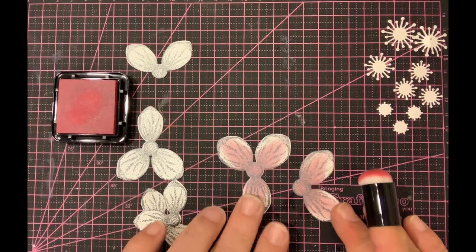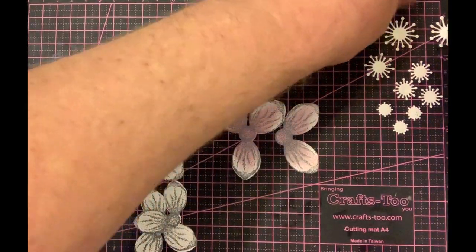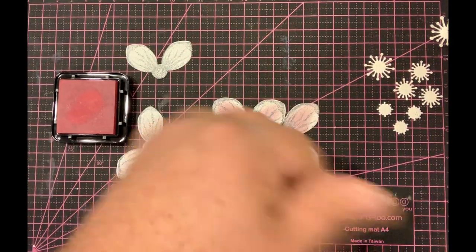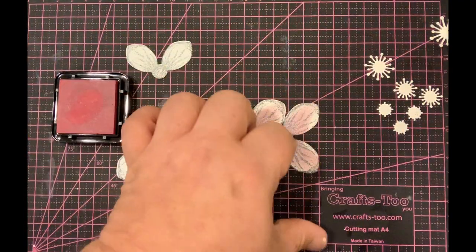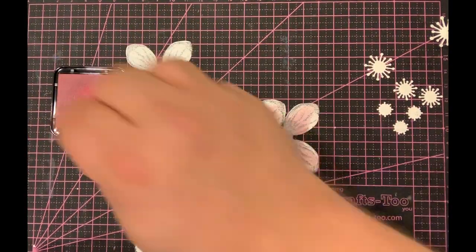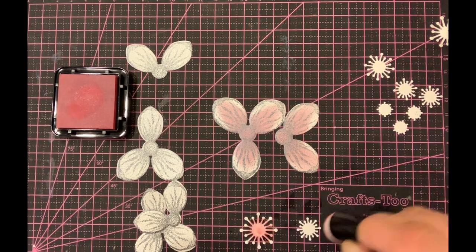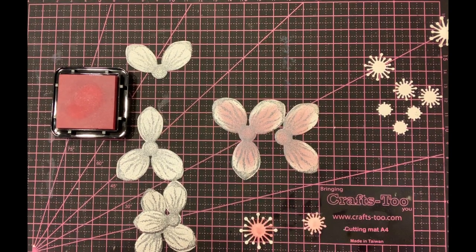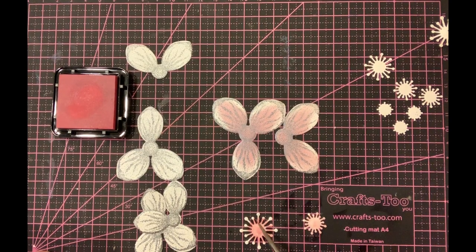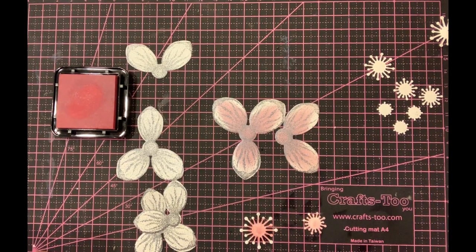I'm going to take one of the large and one of the medium size stamens and put color into the center very lightly. What that does is gives me the pink in the middle but leaves all the little bits of pollen on the outside white.